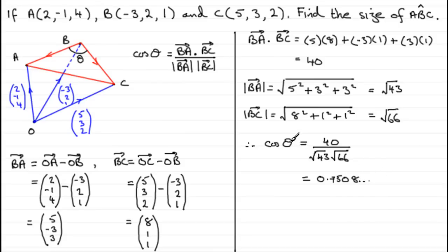So therefore, to get θ or angle ABC, we just need to take the inverse cosine to both sides. The inverse cosine of this turns out to be 41.33 and so on degrees. Therefore, angle ABC, let's say we give it to one decimal place, turns out to be 41.3 degrees.